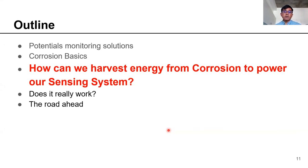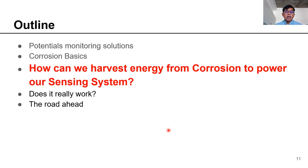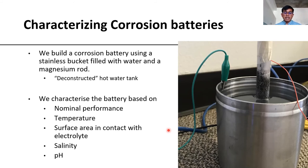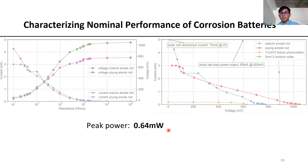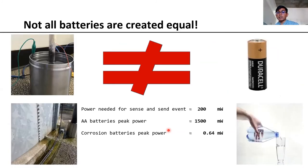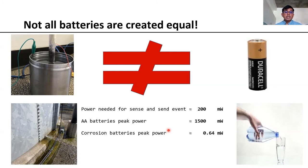Now that we see there is an opportunity to power sensors, let's see how we can harvest this energy. First, we characterize our corrosion battery: we build a simple version with a stainless steel bucket filled with water and a magnesium rod, and carry out characterization experiments. The peak power we get is about 0.64 milliwatts, which is quite low. However, the corrosion battery is quite different from a AA battery — it is analogous to a large water tank with a small trickle of water, while a AA battery is like a bottle with a larger flow. So our corrosion battery has low instantaneous power but a very high energy reserve.